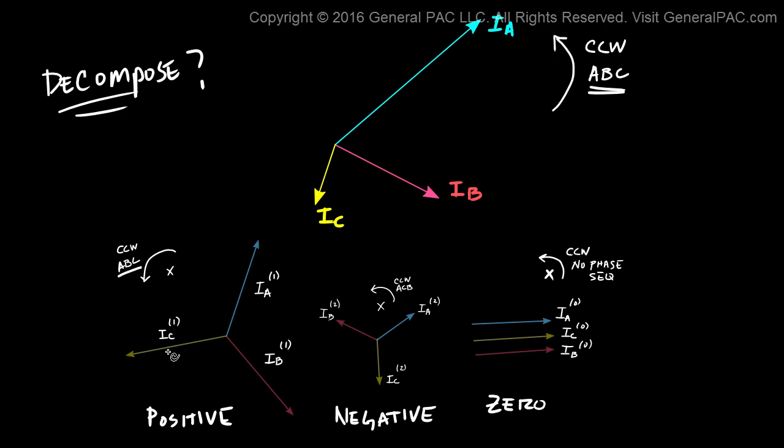So what we're saying is that if we take positive, negative, zero sequence components and we actually add them up. So if we add positive sequence component with negative sequence component with zero sequence component, what we're going to get is our system unbalanced phasors.